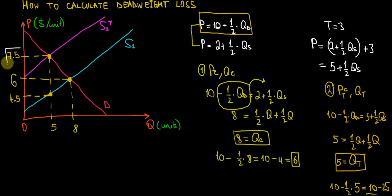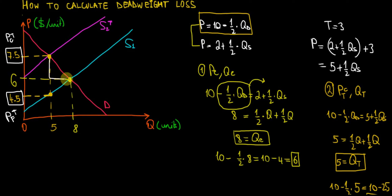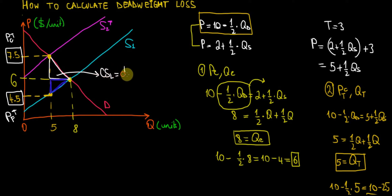So the price consumers are paying after the tax is $7.50, and the price firms are receiving is $4.50. We're now getting closer to the deadweight loss. As shown graphically, the deadweight loss is the loss in consumer surplus — represented by a triangle — and the loss in producer surplus — represented by another triangle. These are two right-angled triangles, so we can calculate them using simple algebra: area equals 1/2 times base times height.